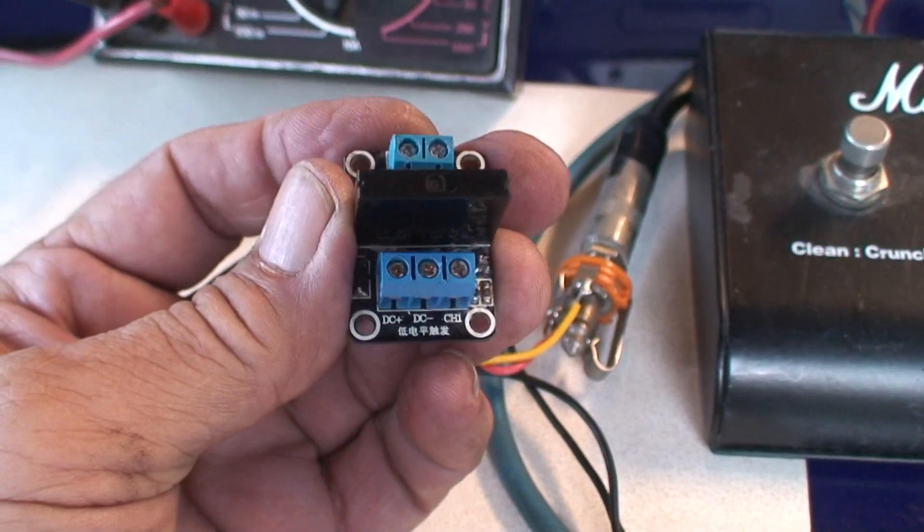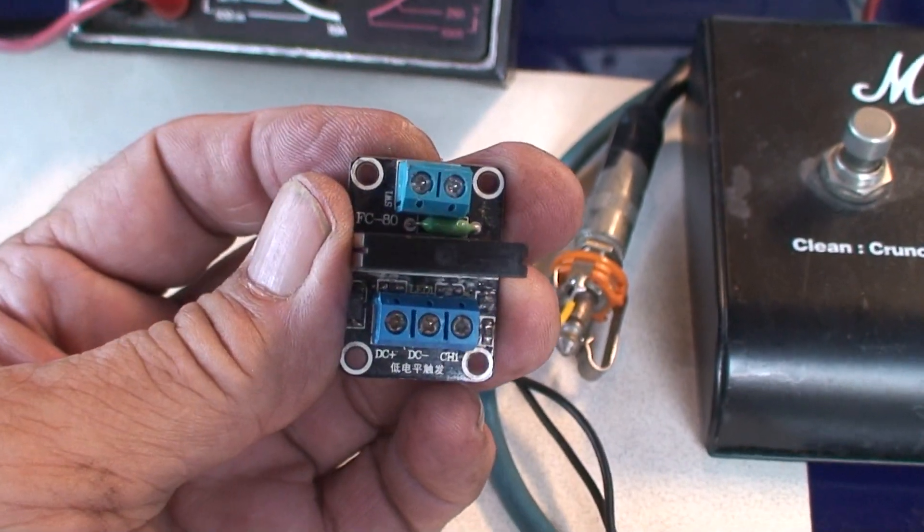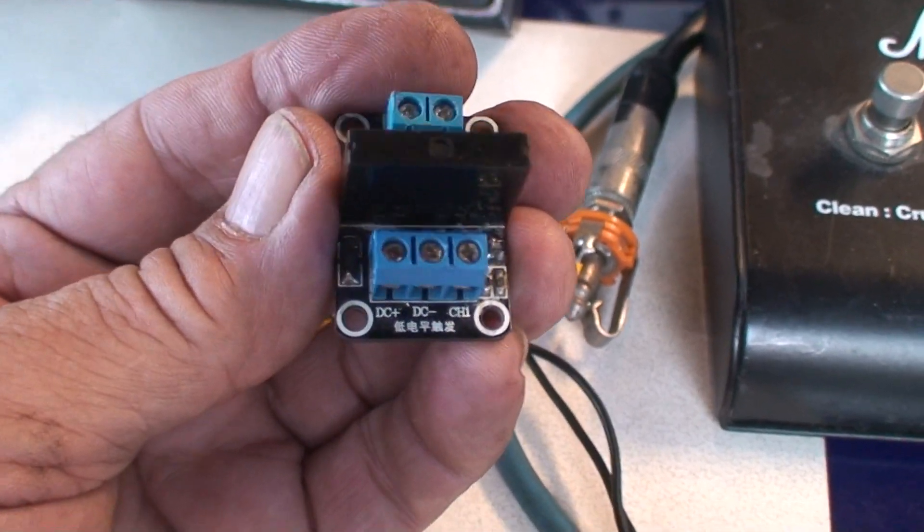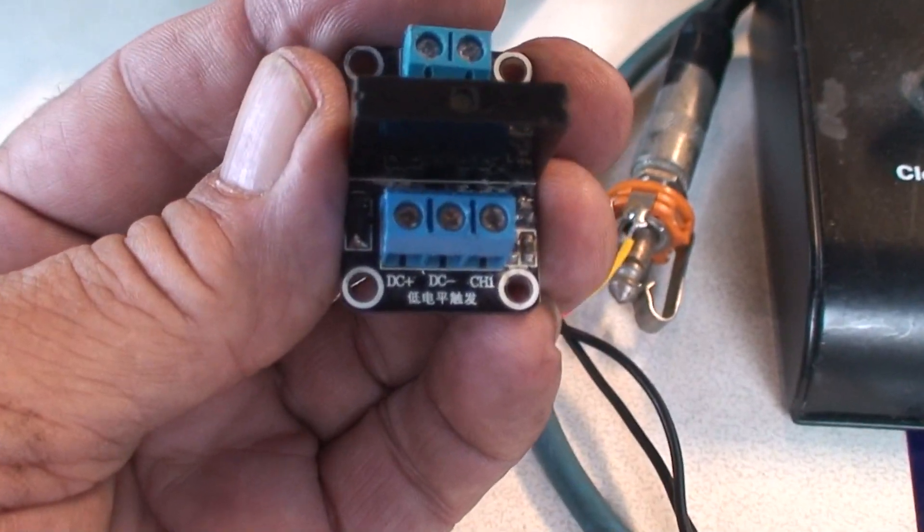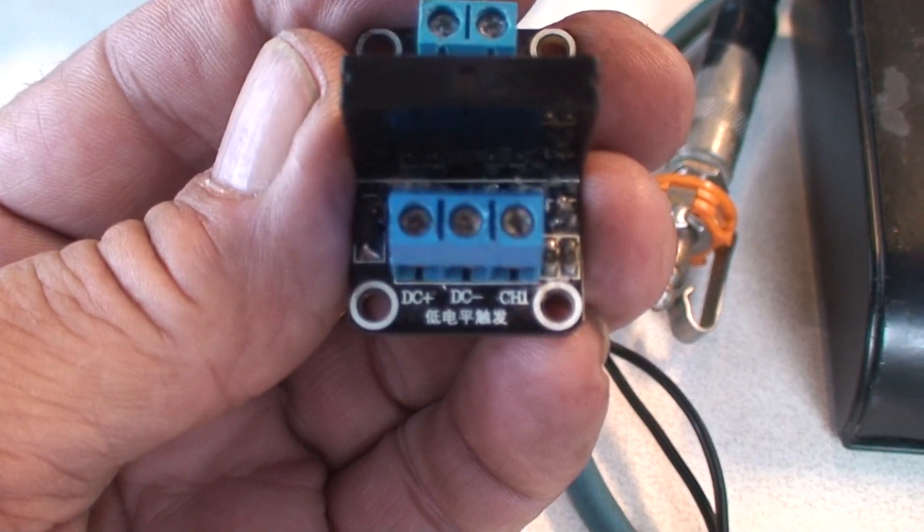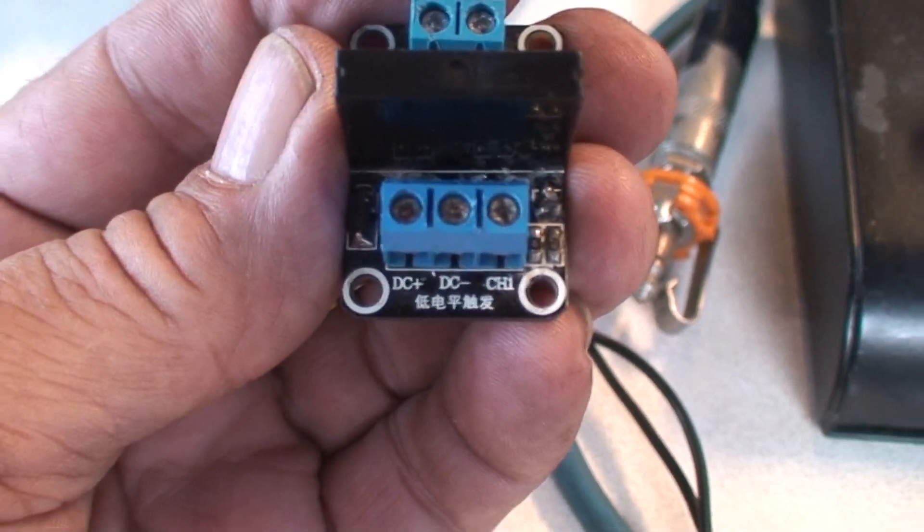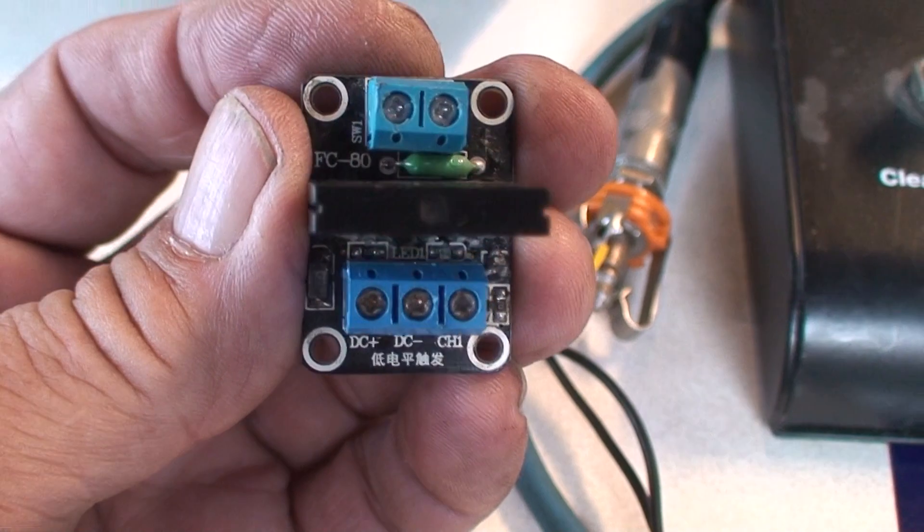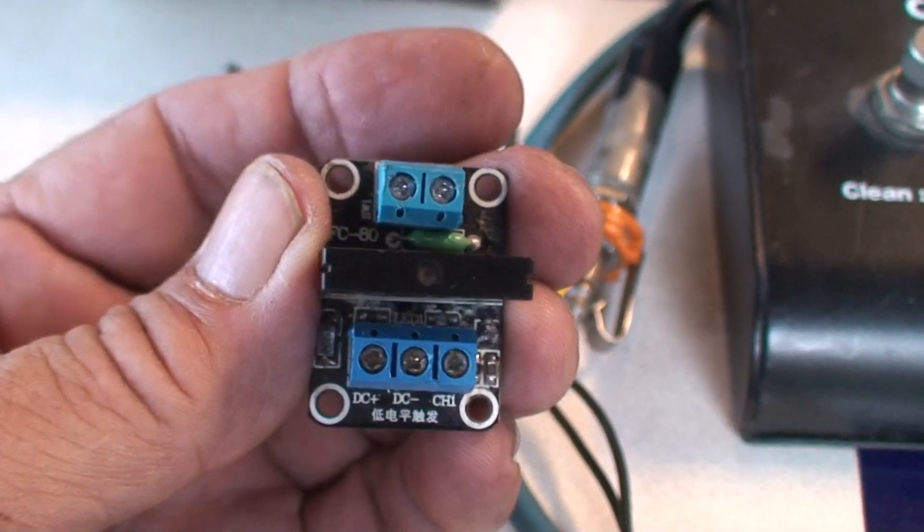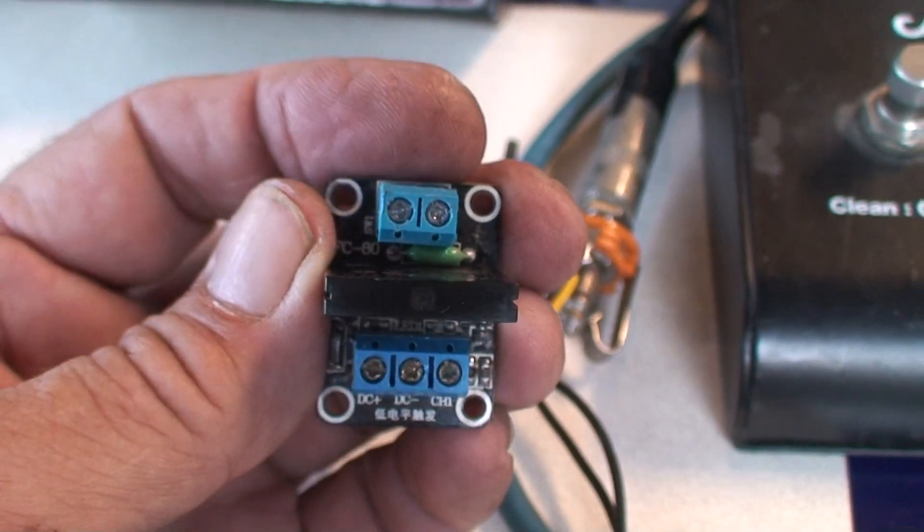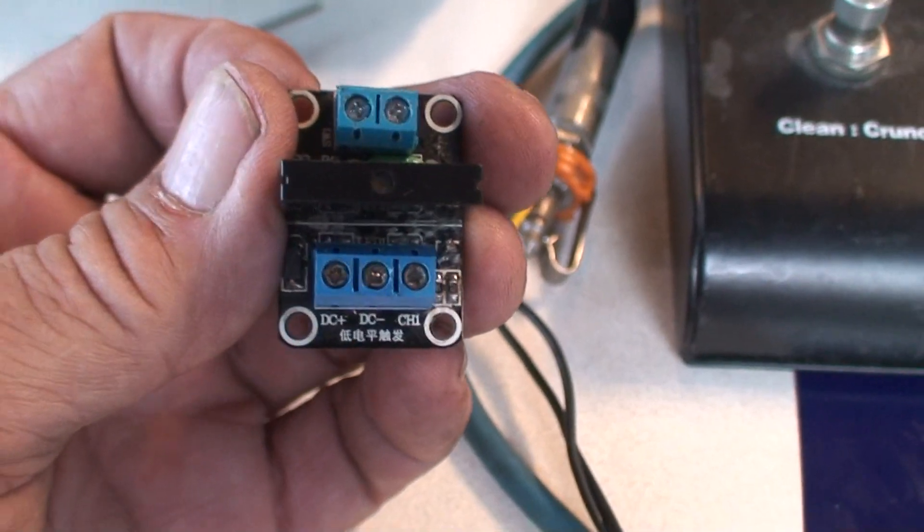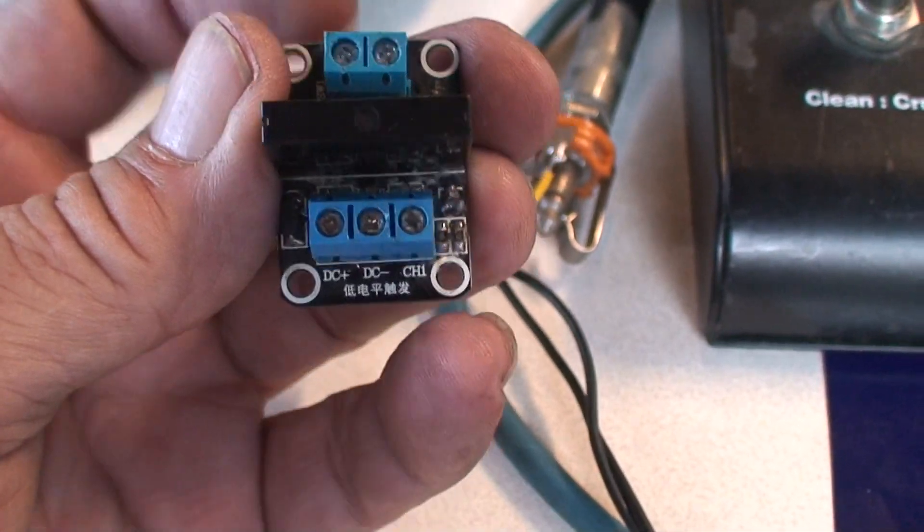So I hooked it up and put 12 volts DC across it in the proper polarity, positive and negative. It didn't do anything - I couldn't get continuity between the two upper mounts. I fooled with it and looked online but couldn't find anything. I knew it had something to do with this signal.